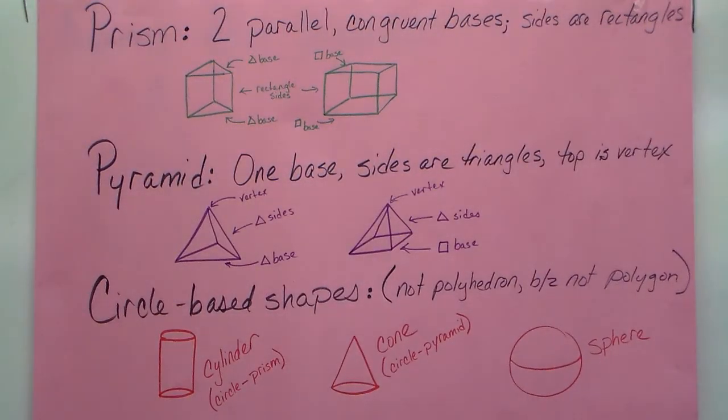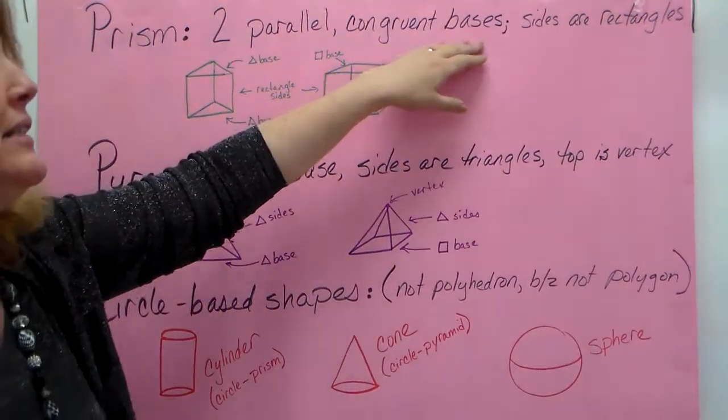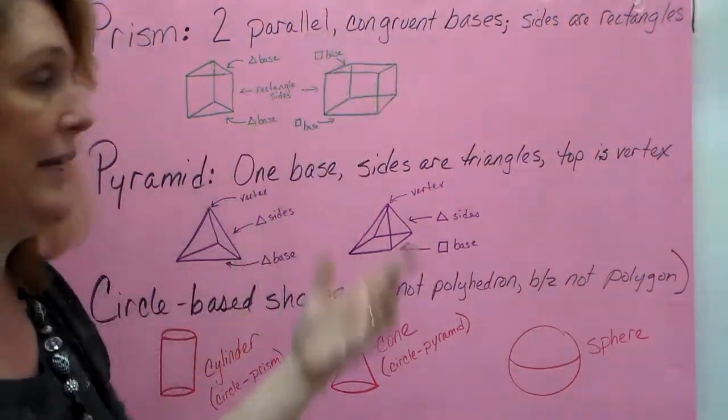So we're going to start with prisms. A prism has two parallel congruent bases, and the sides are rectangles. Well, what the heck does that mean?